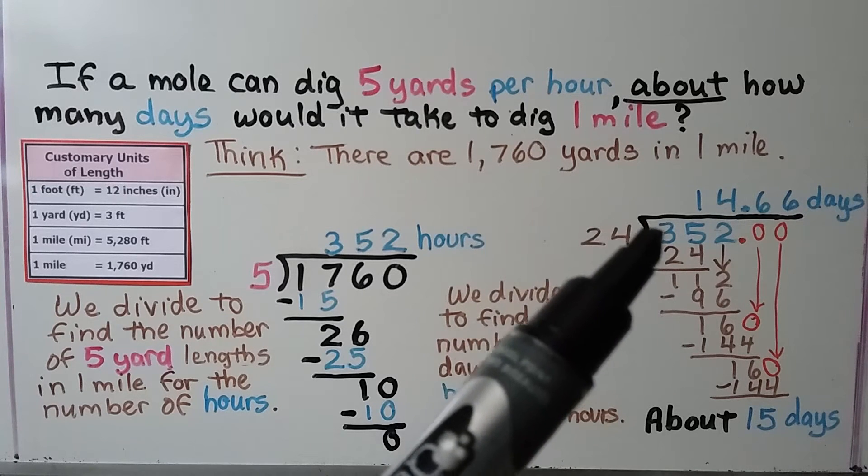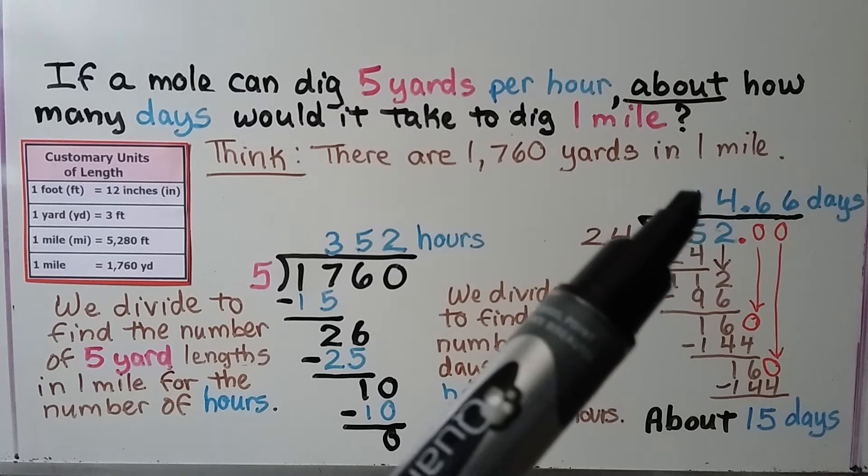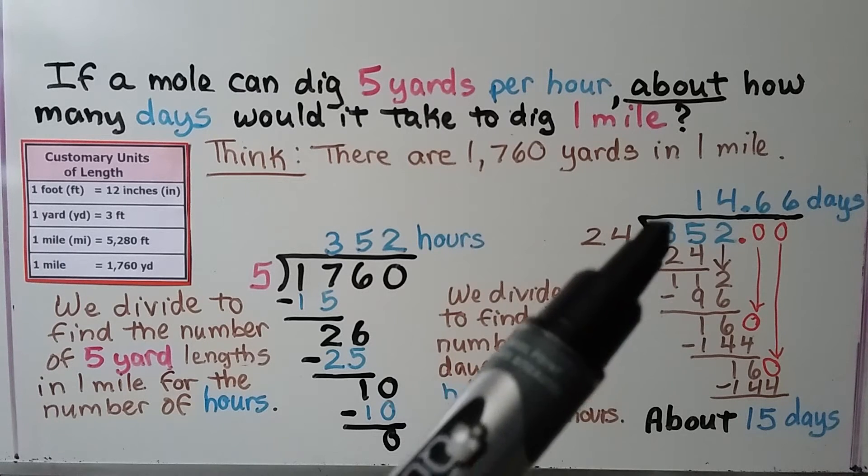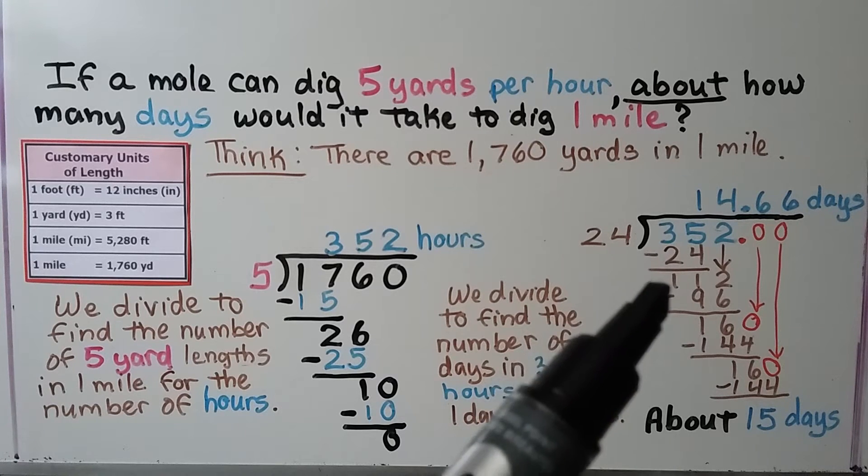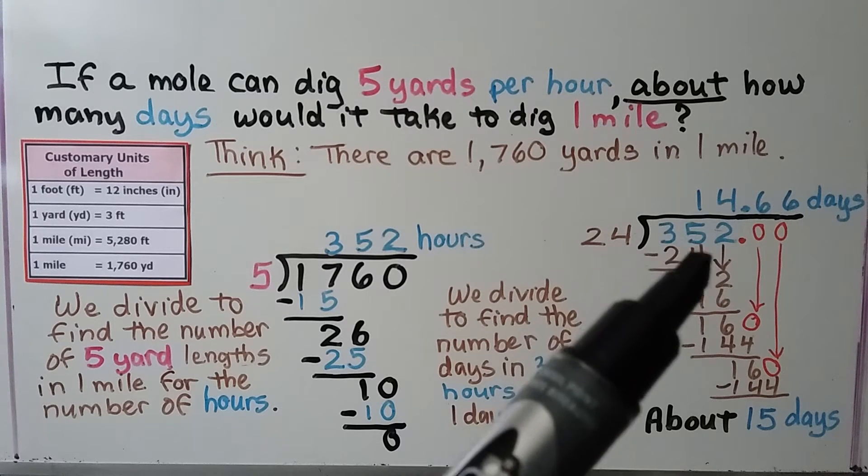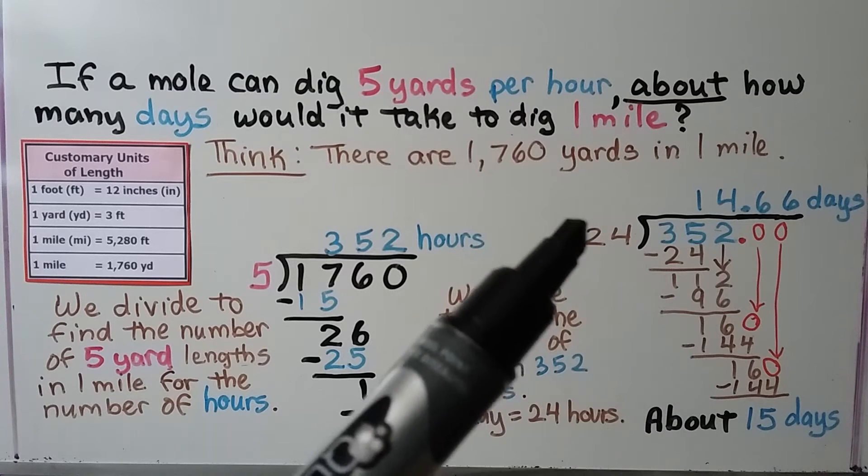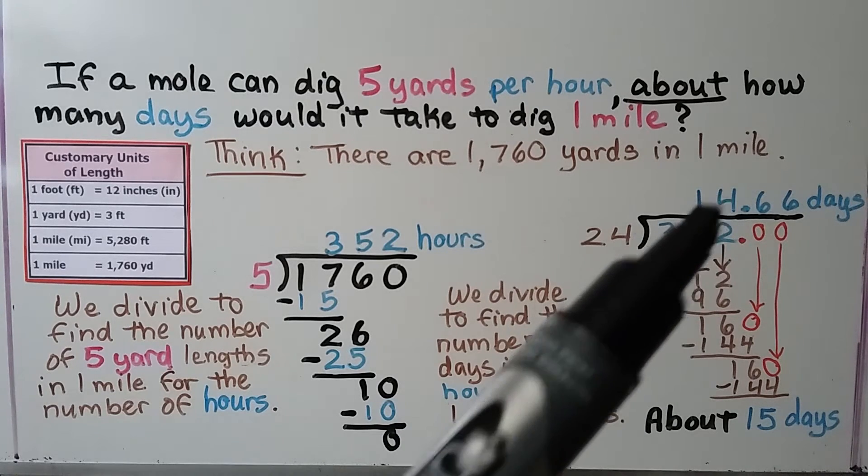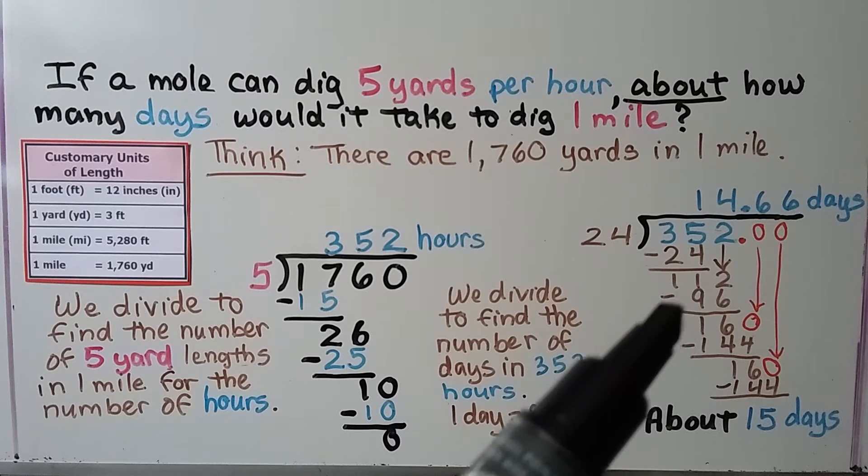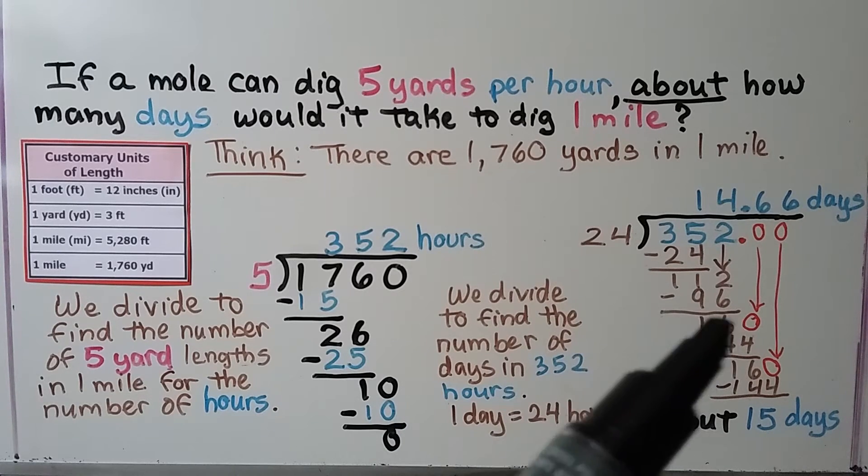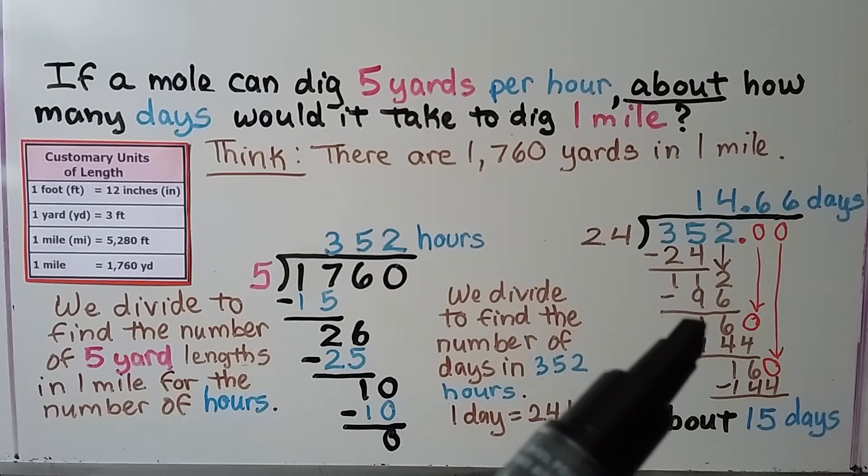24 can't fit into 3, but it can fit into 35 one time. And 1 times 24 is 24. We subtract. We get an 11. And it's the two's turn to come down. 24 fits into 112 four times because 24 times 4 is 96. We subtract and get a 16.